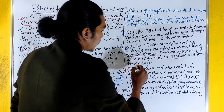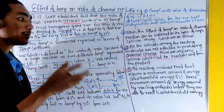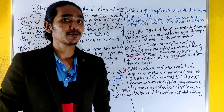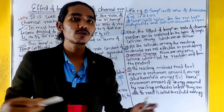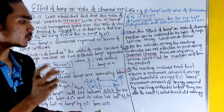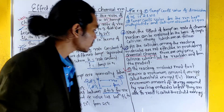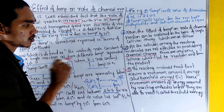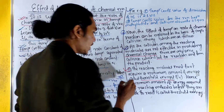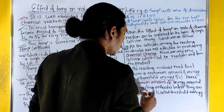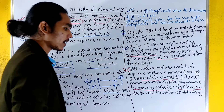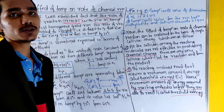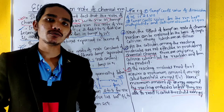The reacting molecules must first acquire the minimum amount of energy called threshold energy. This is the minimum amount of energy that must be present for a collision to be effective. That is called threshold energy.